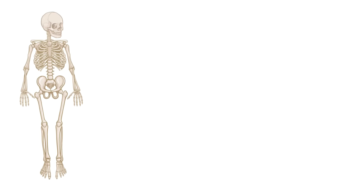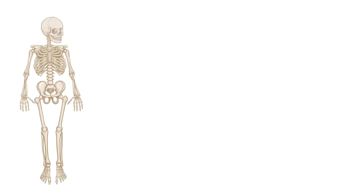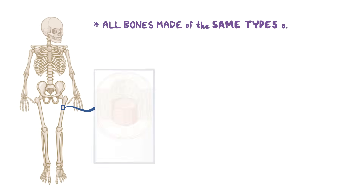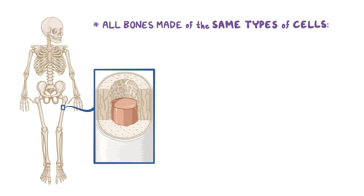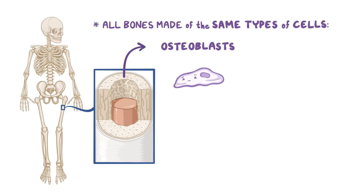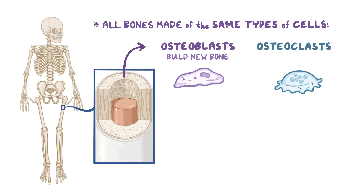Even though bones vary in size and shape, they're all made of the same types of cells. Chief among them are osteoblasts, which build up new bone, and osteoclasts, which help with bone breakdown or resorption.